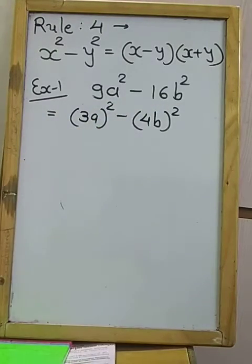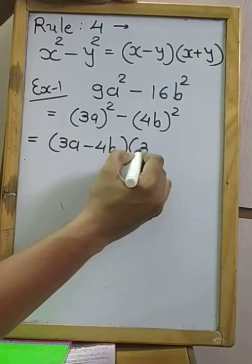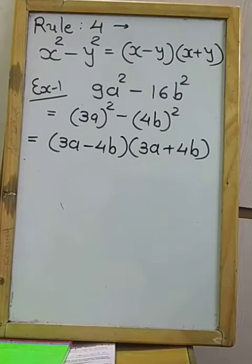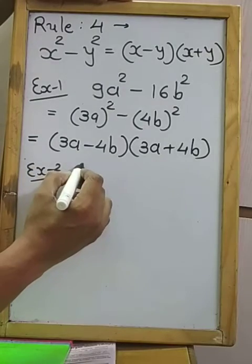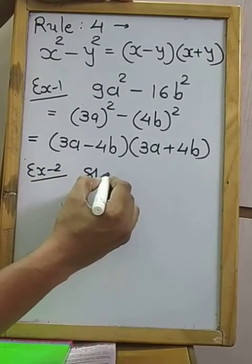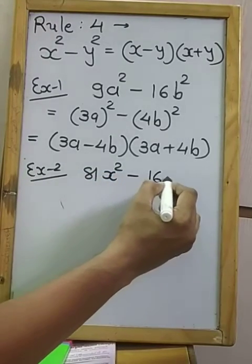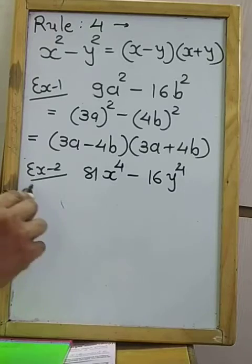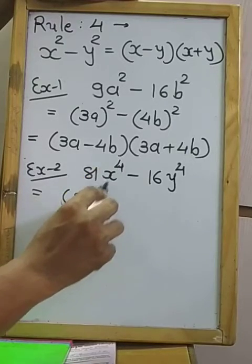Both sides are squares and there is minus in between. So we factorize as: (first term − second term)(first term + second term), giving (3A − 4B)(3A + 4B). Now for example two, we take a four-power expression. 81x⁴ − 16y⁴. The form of 81 is 9, and x⁴ is (x²)².